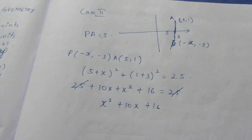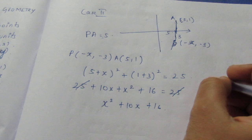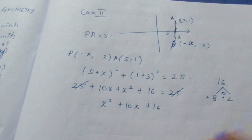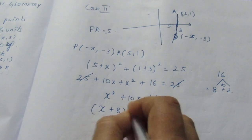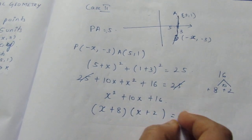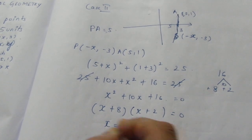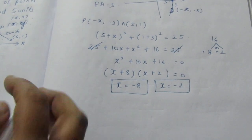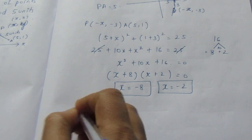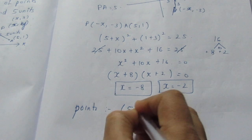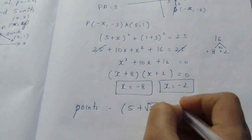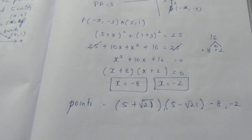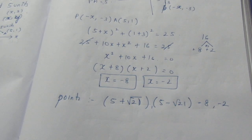Cancelling 25 and 25, we get x² + 10x + 16 = 0. Trying to split it: 8 × 2 = 16 and 8 + 2 = 10, so (x + 8)(x + 2) = 0. Therefore x = −8 or x = −2. So we have 4 values in total. The points can be (5 + √21, 3), (5 − √21, 3), (−8, −3), (−2, −3). That is the sum. Thank you.